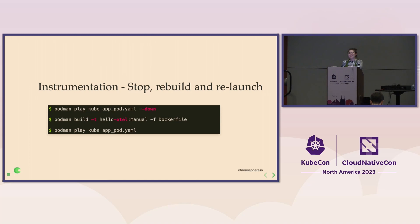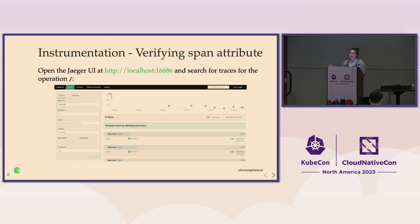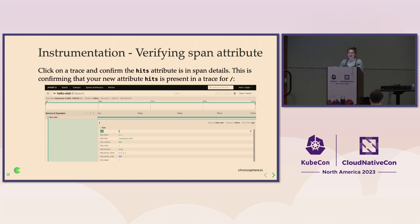To stop a pod, it is actually 'podman play kube pod-file --down.' Then go ahead and rebuild your Dockerfile/container file, and run the pod again. Open up your browser, make a couple requests to localhost 8000. Go ahead and make sure that when you find a trace for that slash route and click on the span details page, you see right at the top in span tags — 'hits' — and however many times you're refreshing that page.